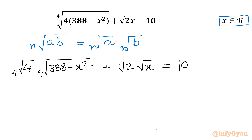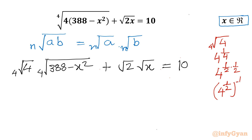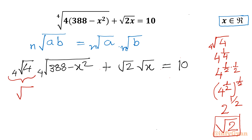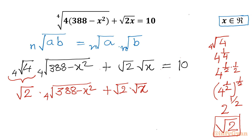Now, the 4th root of 4 can be written as 4 to the power 1/4, which is 4 to the power (1/2 × 1/2). Using exponent properties, this is (4^(1/2))^(1/2), which is (√4)^(1/2) = 2^(1/2) = √2. So I put √2 here, giving us √2 times the 4th root of (388 minus x squared) plus √2 times √x equal to 10.